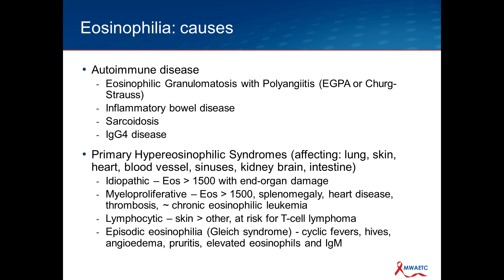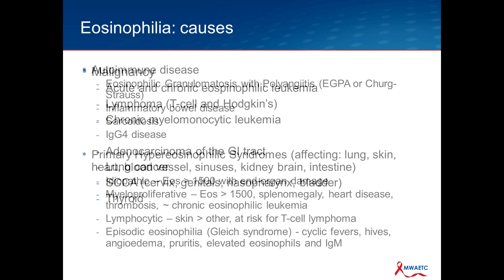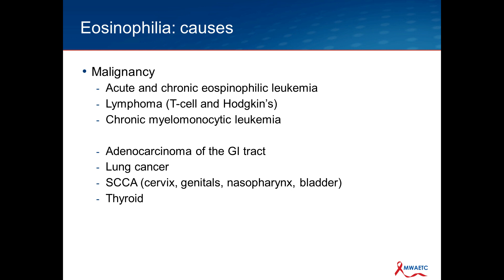Episodic eosinophilia — Gleich syndrome — involves cyclic fevers, angioedema, and elevated IgM and eosinophil levels. Among malignancies: acute and chronic eosinophilic leukemia, T-cell lymphomas with high eosinophils, Hodgkin's disease, and chronic leukemia due to eosinophilia. Other malignancies including adenocarcinomas of the GI tract, lung cancers, squamous cell cancers, and thyroid cancer can also trigger the development of eosinophilia.